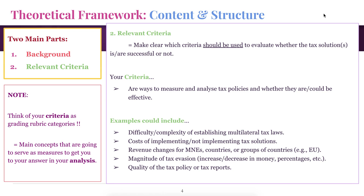A quick note about relevant criteria: you can think of it similar to a grading rubric. Even for this writing assignment, your tutors are going to have subtopics that evaluate certain aspects of your writing assignment to arrive at your final grade — they're going to analyze your content, the structure of your essay, your reference list. These are components that individually make up a certain amount of points and then overall give you a total grade. Think of your criteria as these individual components that overall are going to give you an answer as to what extent your central question is valid or whether a tax policy would be successful.